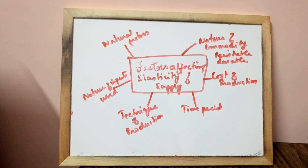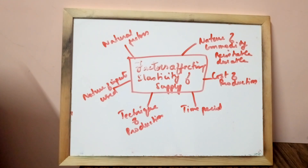So if cost of production increases rapidly, supply will be inelastic. If cost of production increases slowly with rise in output, supply will be more elastic.